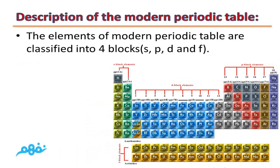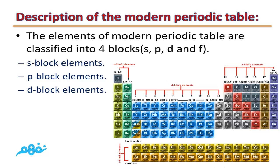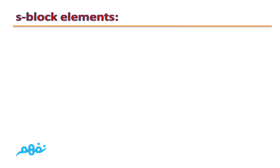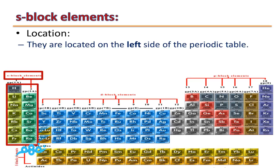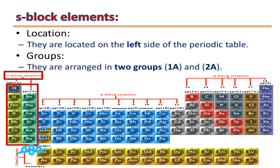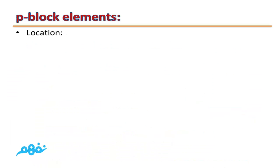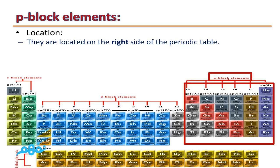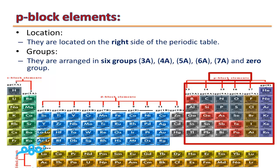The elements of the modern periodic table are classified into 4 blocks: S block, P block, D block, and F block. S block elements are located on the left-hand side of the modern periodic table and contain two groups: Group 1A and 2A. P block elements are located on the right-hand side and are arranged in 6 groups: 3A, 4A, 5A, 6A, 7A, and finally Group 0, which contains noble or inert gases.